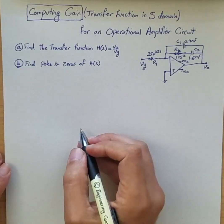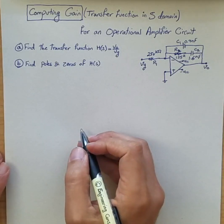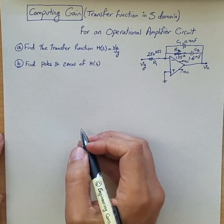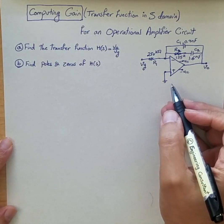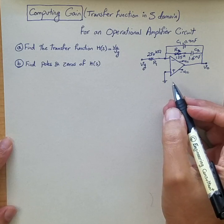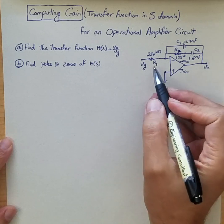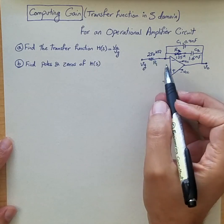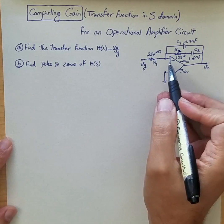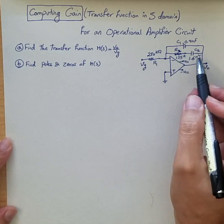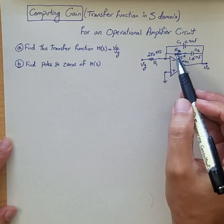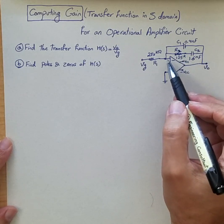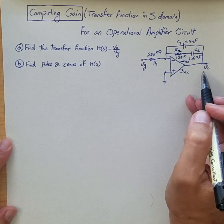How to compute gain for an operational amplifier circuit, basically computing transfer function gain in S domain. Here is a simple ideal op-amp circuit given with resistor R1 250k connected to the negative terminal and then R2 feedback resistor, and then C2 feedback cap and C1 also feedback cap between the negative terminal and output port.